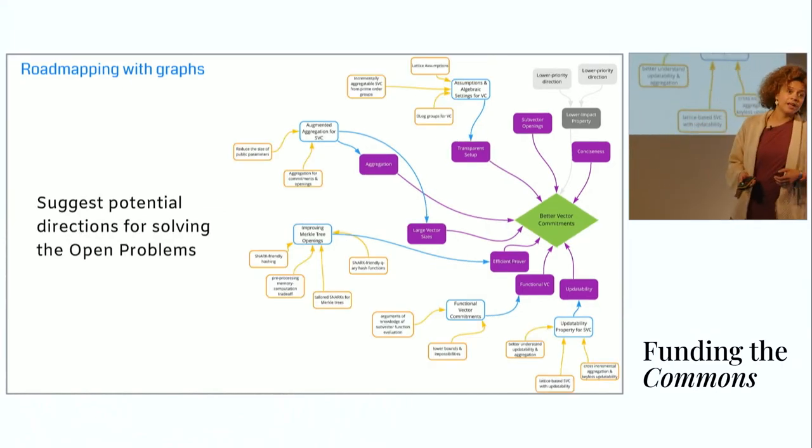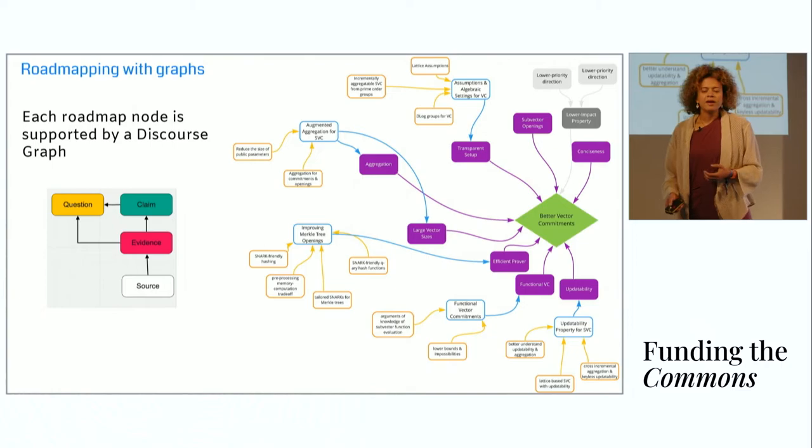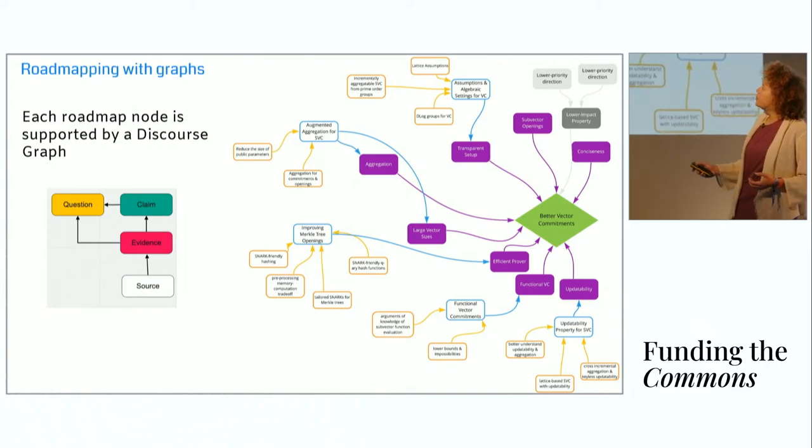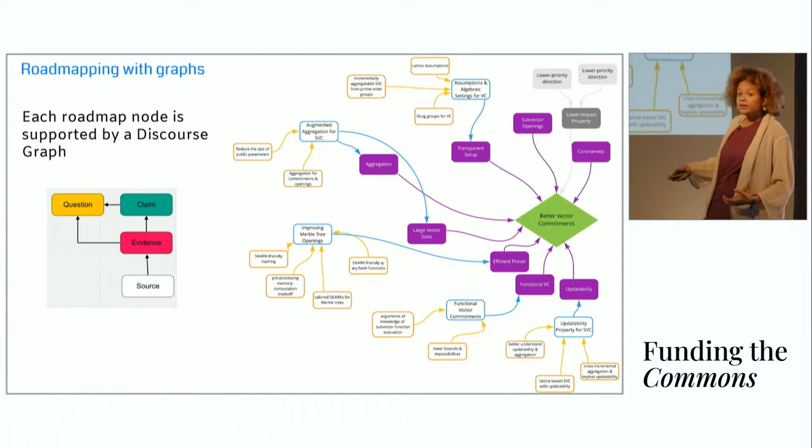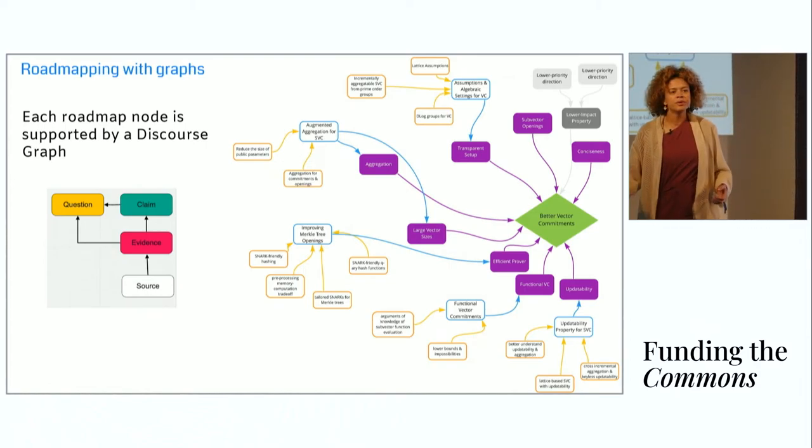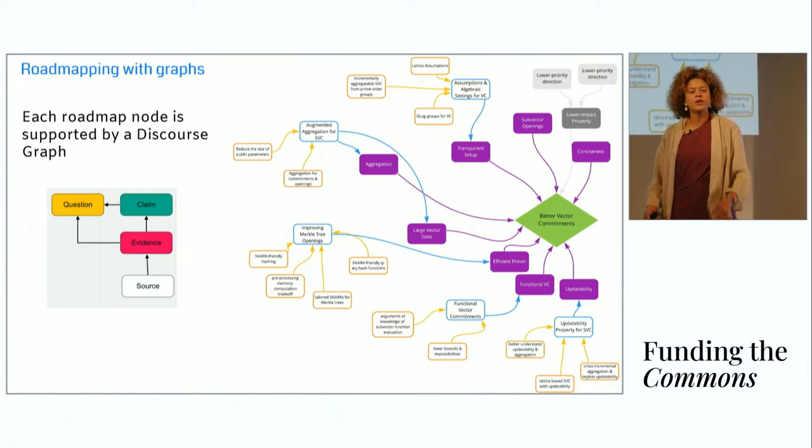These are ways that you might address or approach the open problems that your grantees may make some mention of in their grant applications. Here you can see each roadmap node in the RFP generation process can be seen as being supported by a discourse graph. This is where that composability comes in. You can just drop in a discourse graph at any one of these nodes to support your reasoning as you're building this graph.